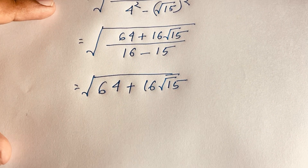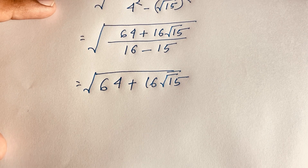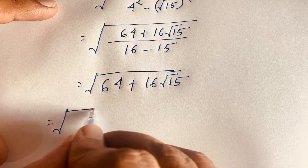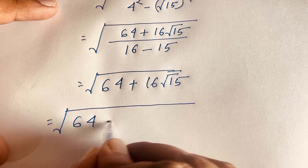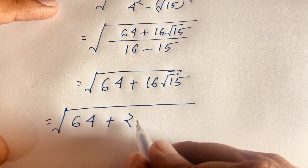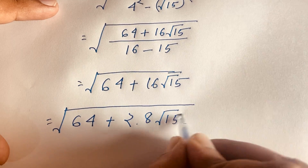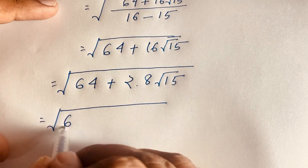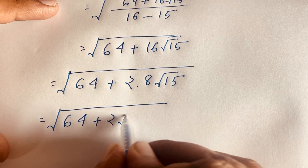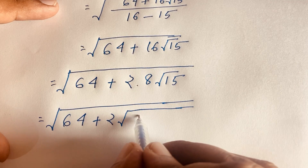Now I apply the algebraic rule: (a + b)² = a² + 2ab + b². I can see that 64 is 8 squared, and 16 equals 2 times 8. So square root of 64 is 8, and I can write this as square root of 8 squared plus 2 times 8 times square root 15.